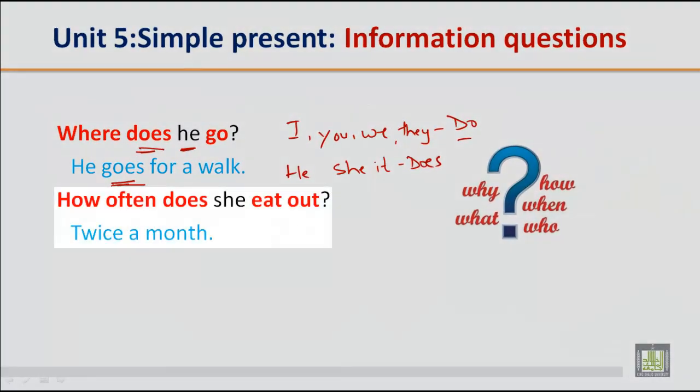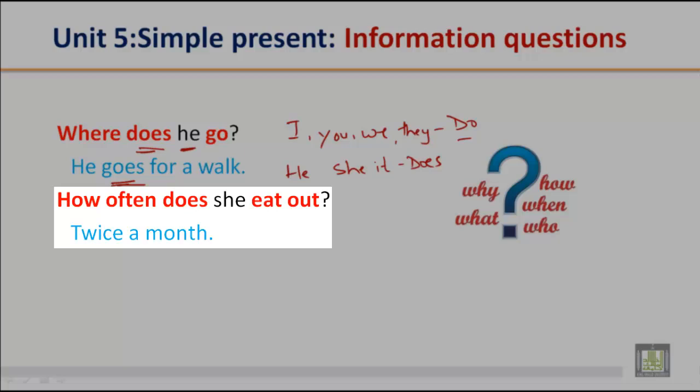Let's look at another example: 'How often does she eat out?' Again, since the subject is 'she', we use 'does'. The answer could be: 'She eats out twice a month.'